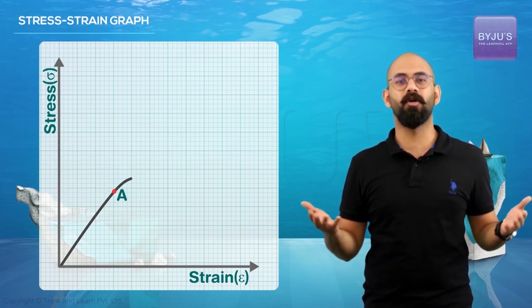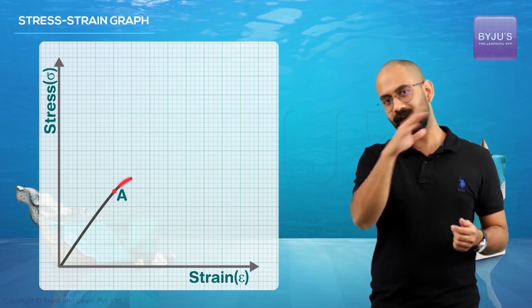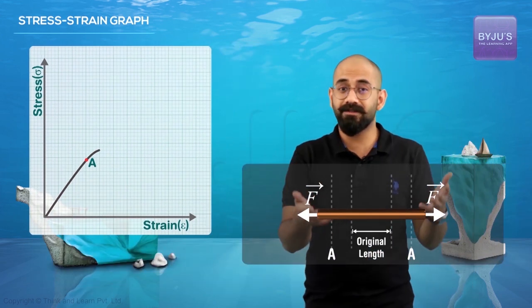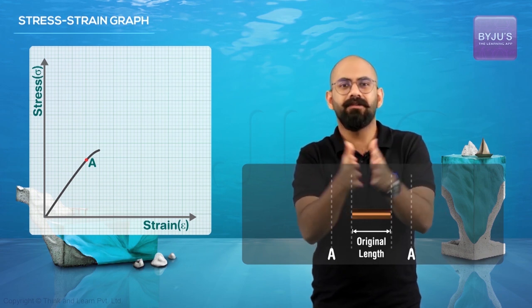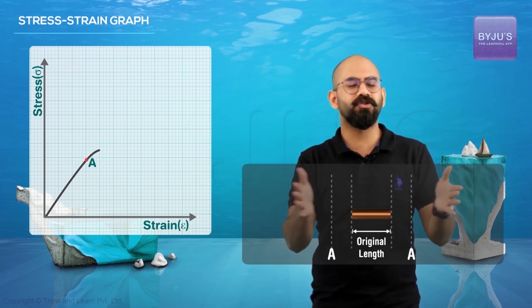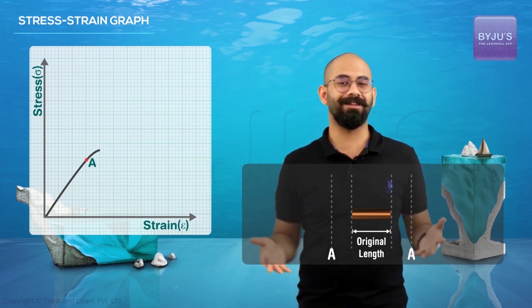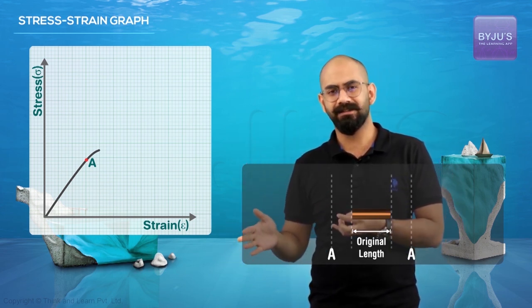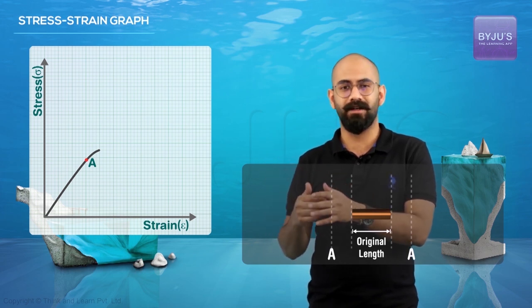Beyond point A there is no more proportionality. However, even though the proportionality is not valid, if I bring it back — if I reduce the force slowly — the wire will still come back to its original length. So it is still completely elastic, even though the proportionality is not valid.